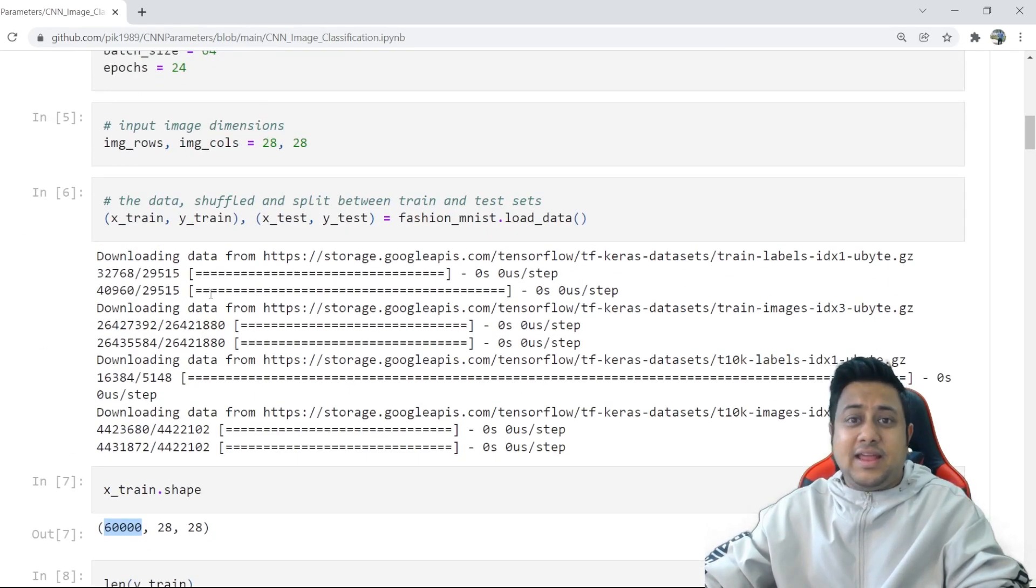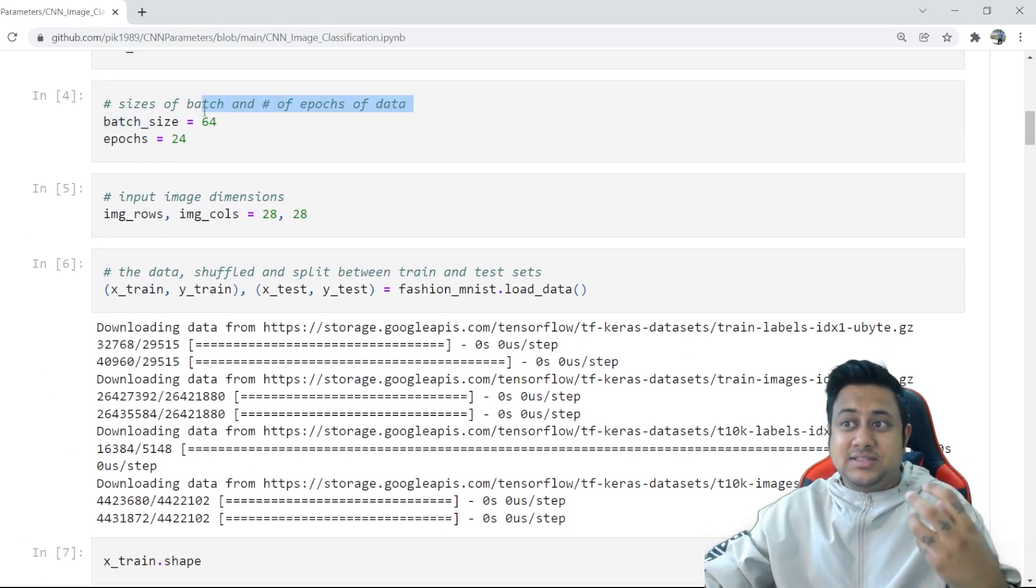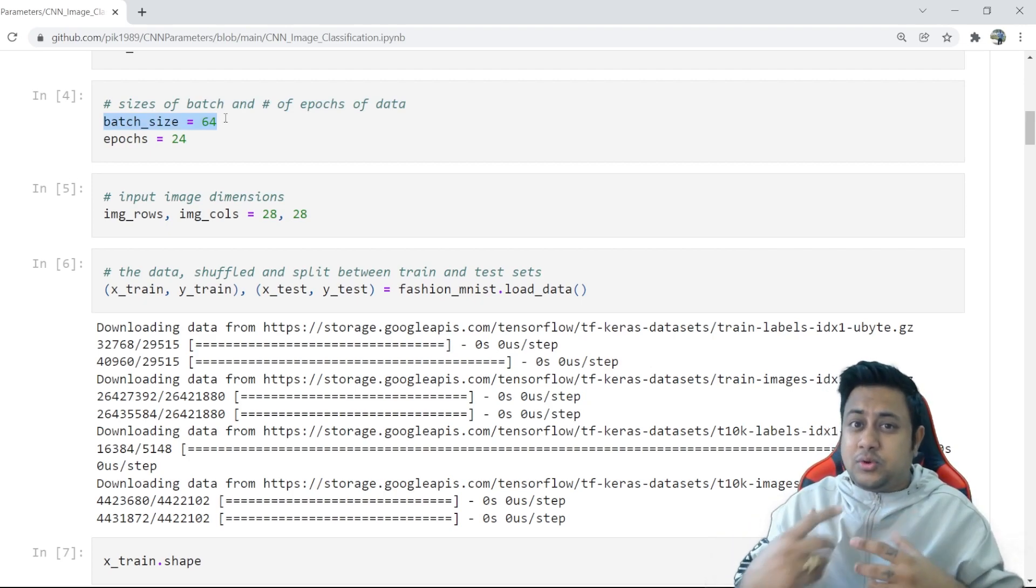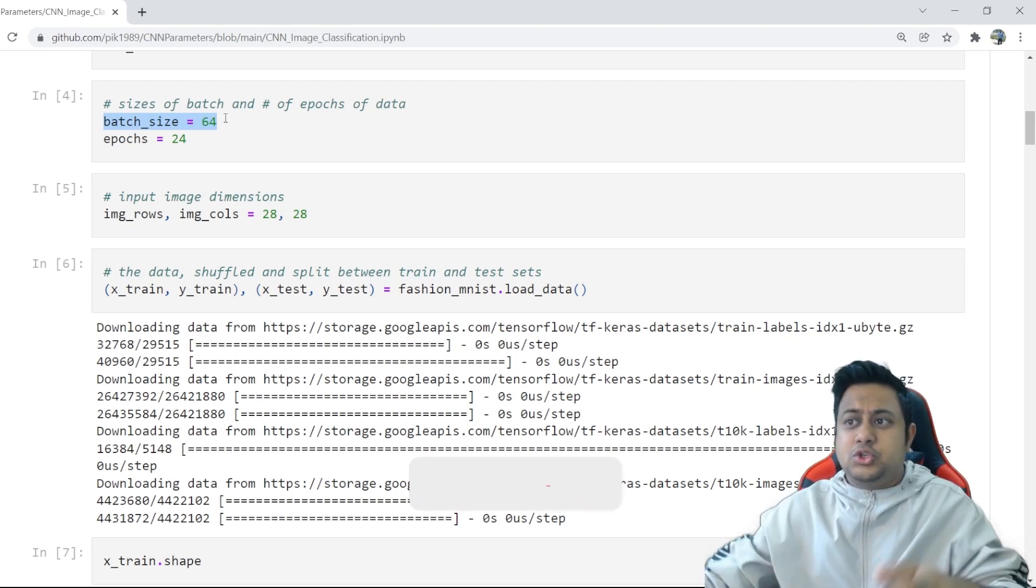So if training data is 60,000 and the batch size is 64, how many iterations will be required to complete one epoch? 60,000 divided by 64, which is somewhere around 937 point something. You can use the calculator - 937 something iterations in one epoch.